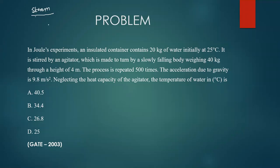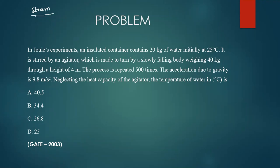Now we move on to this problem. This problem came in GATE 2003. Go ahead, pause the video, and try to solve this problem yourself. In Joule's experiments, an insulated container contains 20 kg of water initially at 25 degrees Celsius. It is stirred by an agitator which is made to turn by a slowly falling body weighing 40 kg through a height of 4 meters.